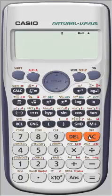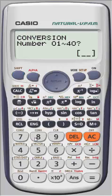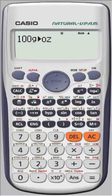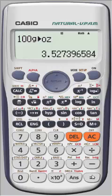Or perhaps if we want to convert 100 grams into ounces, we would enter 100, convert, grams to ounces is conversion 22, and we press equals, and there we have 100 grams is 3.527 ounces.